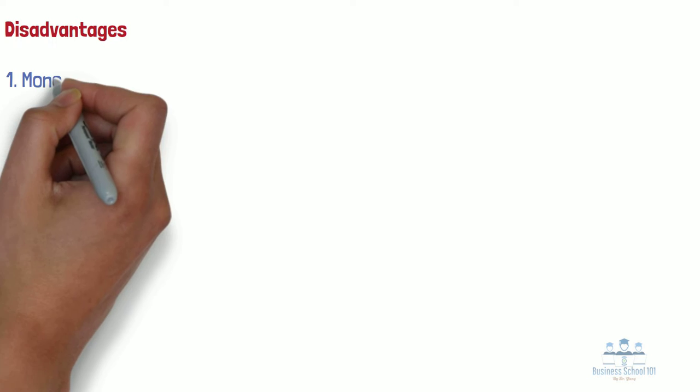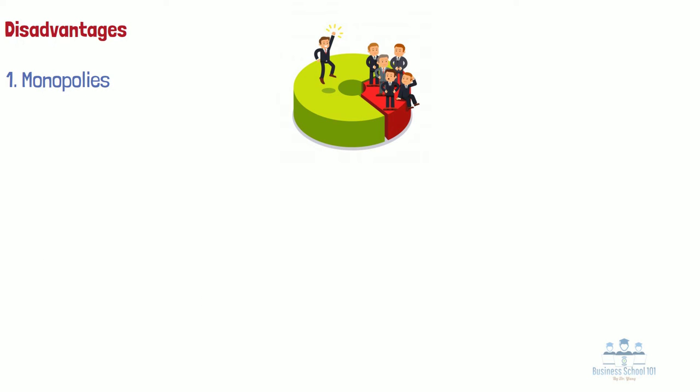Despite all of these benefits, market economies also have many disadvantages. Number one, monopolies. There are natural monopolies such as utilities, sewer services, and train lines that present a big issue to free markets. The cost to enter such markets is huge — for example, a utility company may need to create a whole new supply network for customers' houses, which is economically inefficient. As a result, one company may be able to dominate the market and charge prices above the market rate.